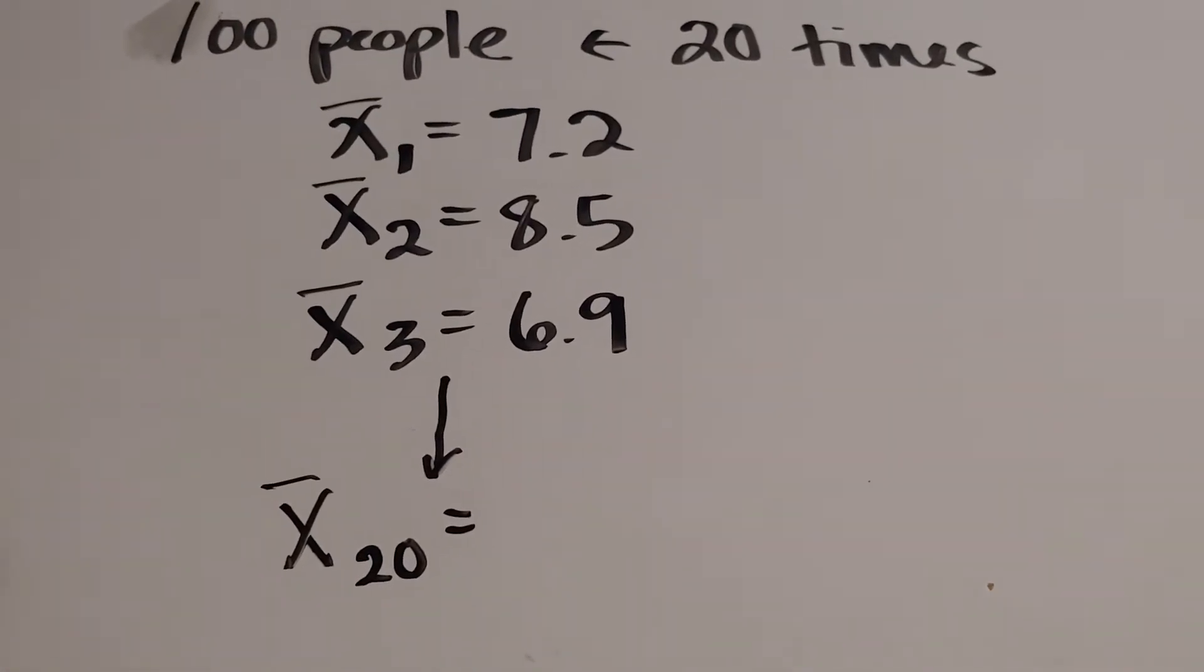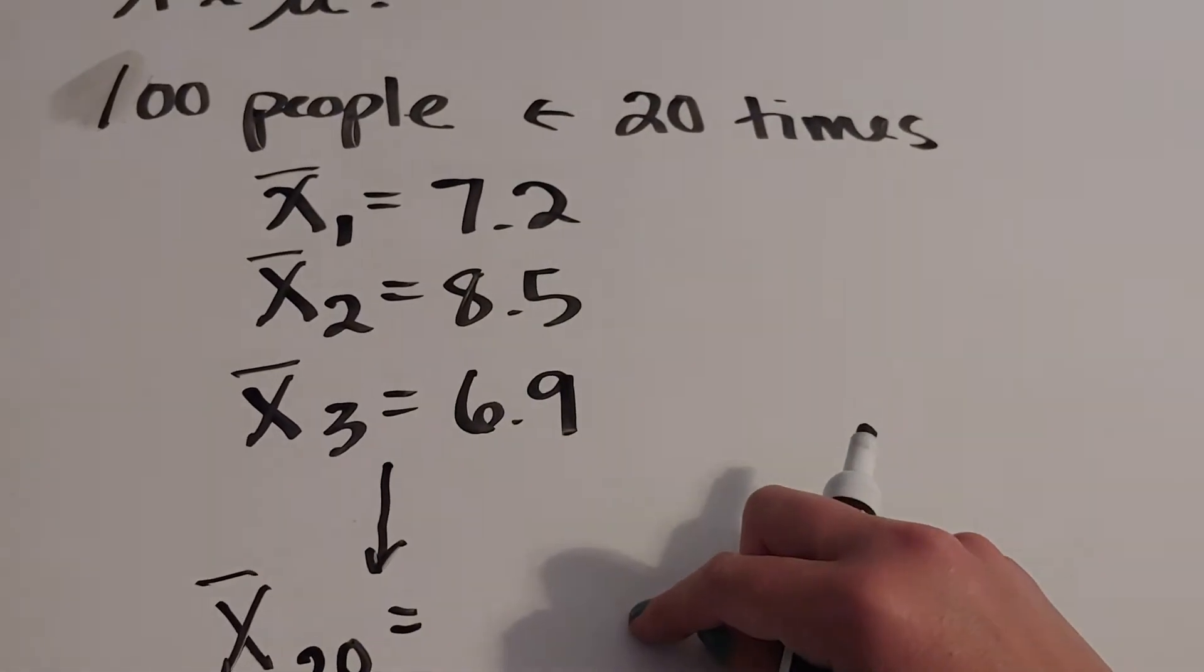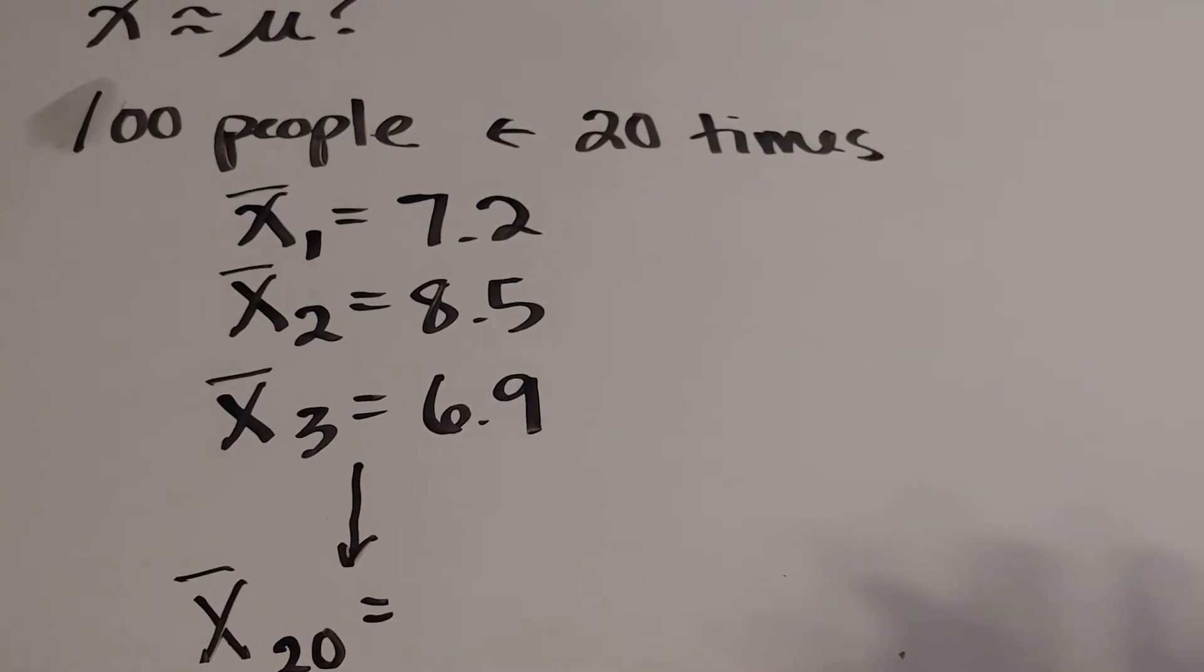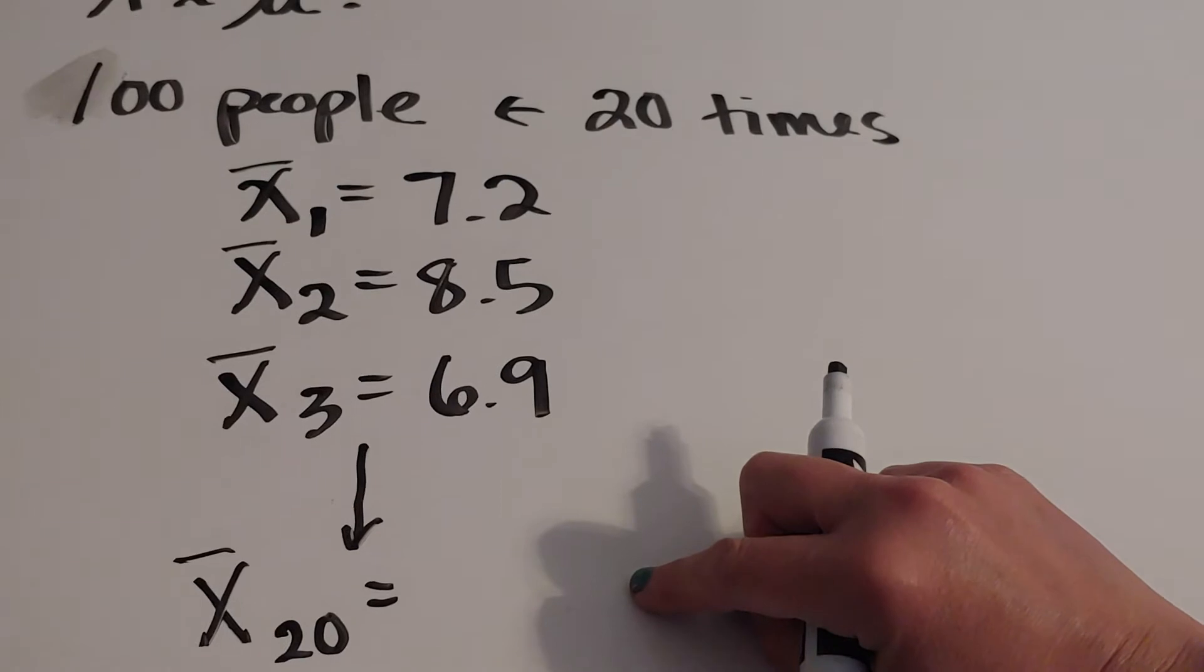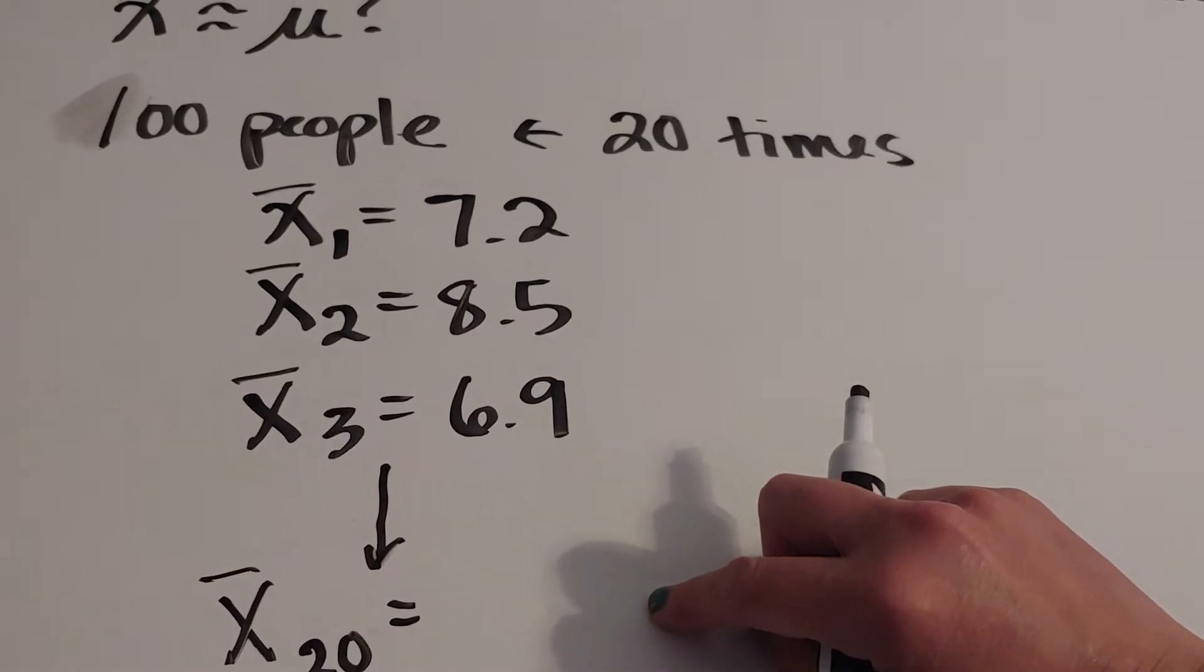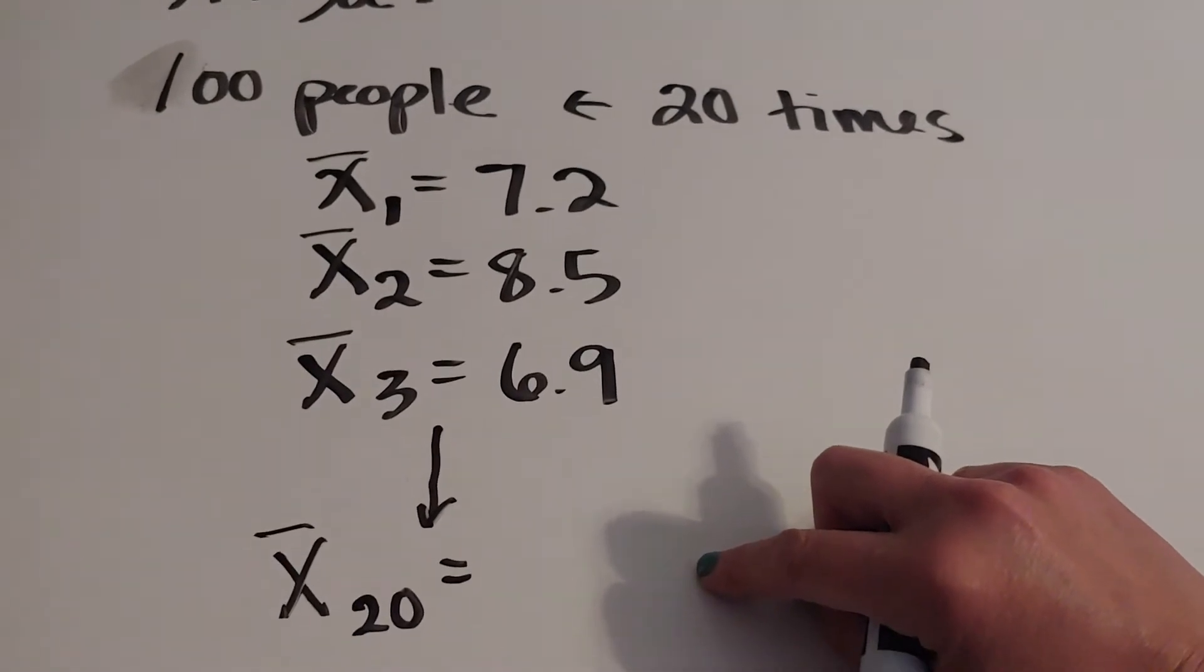Now what you're going to notice, though, is that these X̄s aren't going to vary as much as if I just asked everyone. Because I'm no longer going to get any zeros. Unless I ask 100 people and they all say zero shows, which we know they're lying, we're not going to see that.